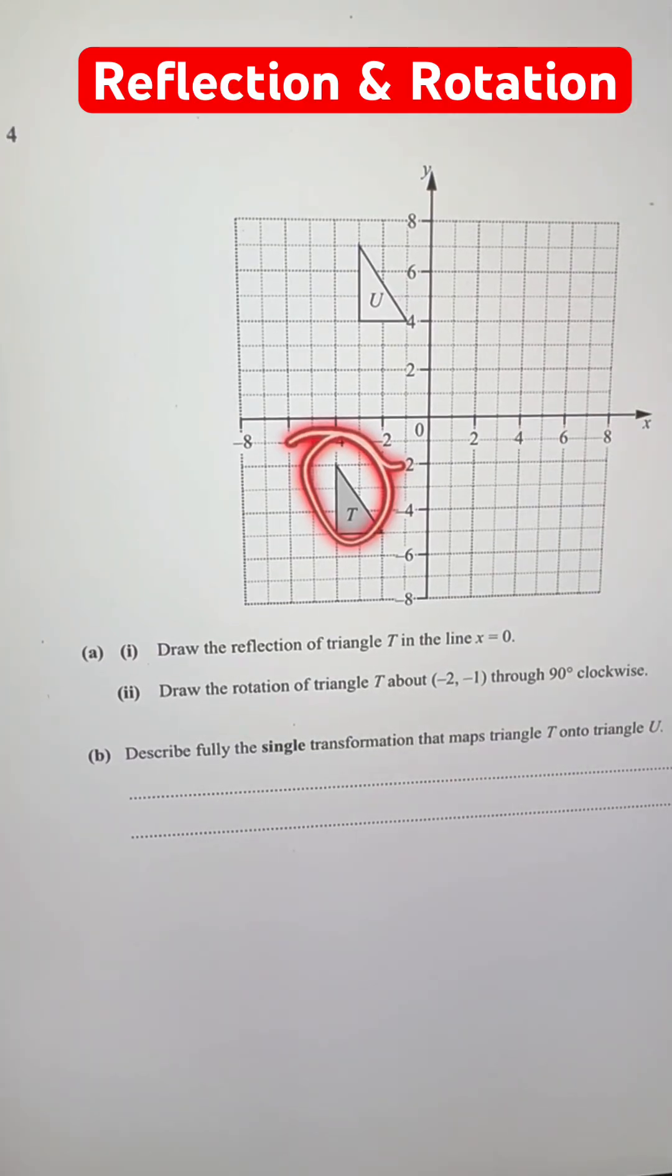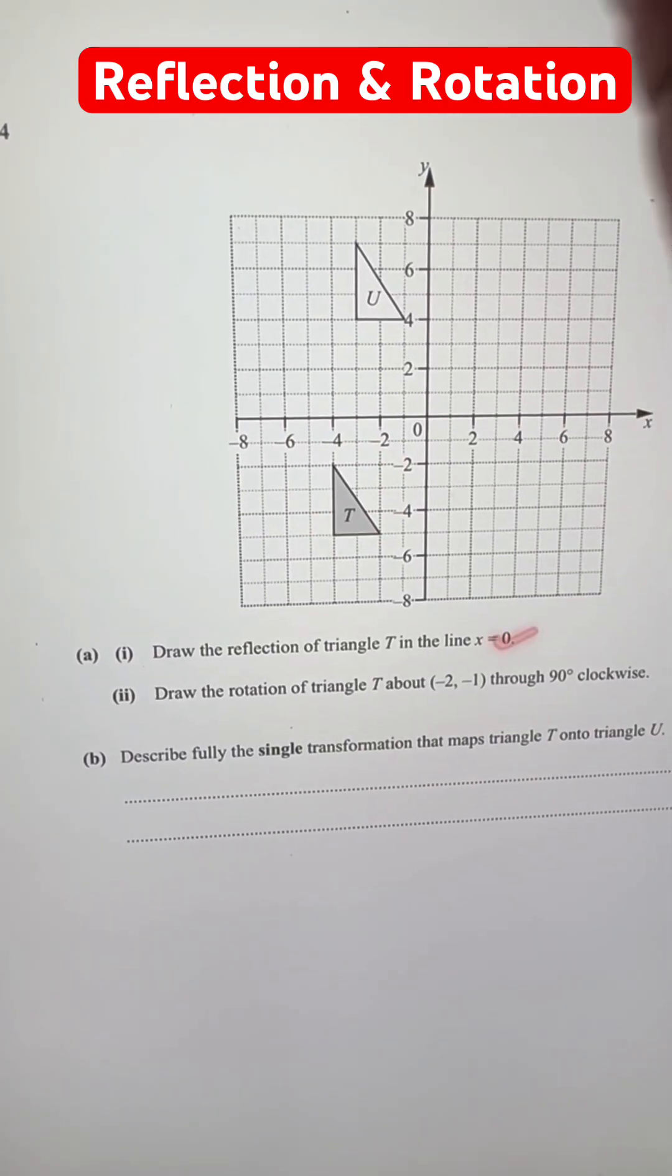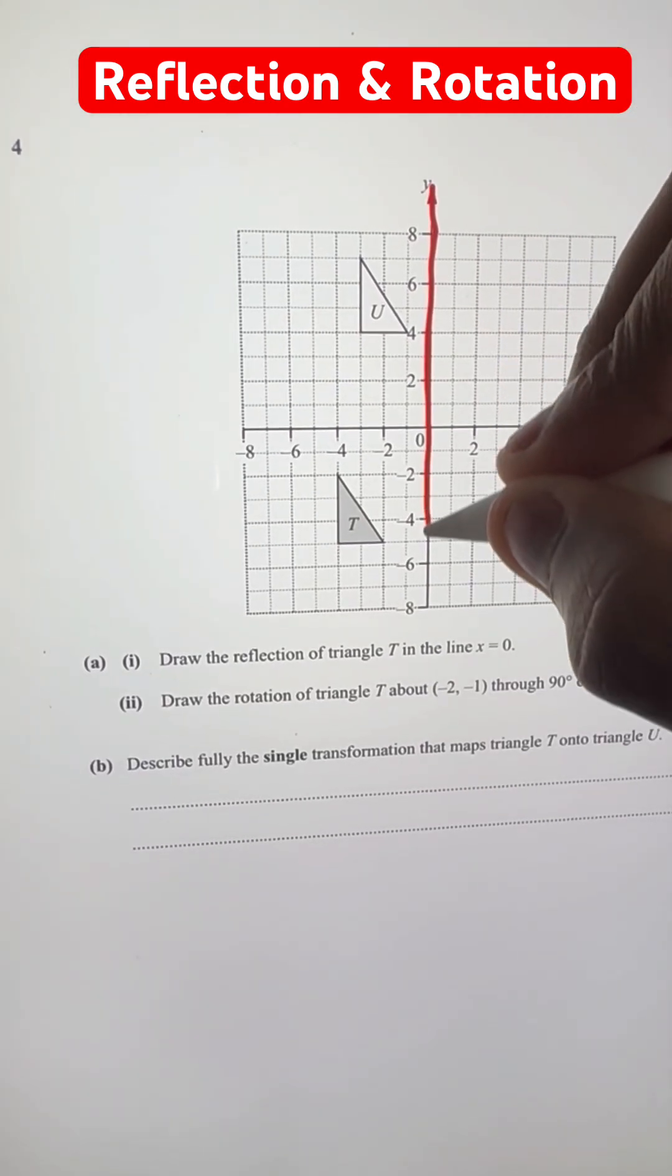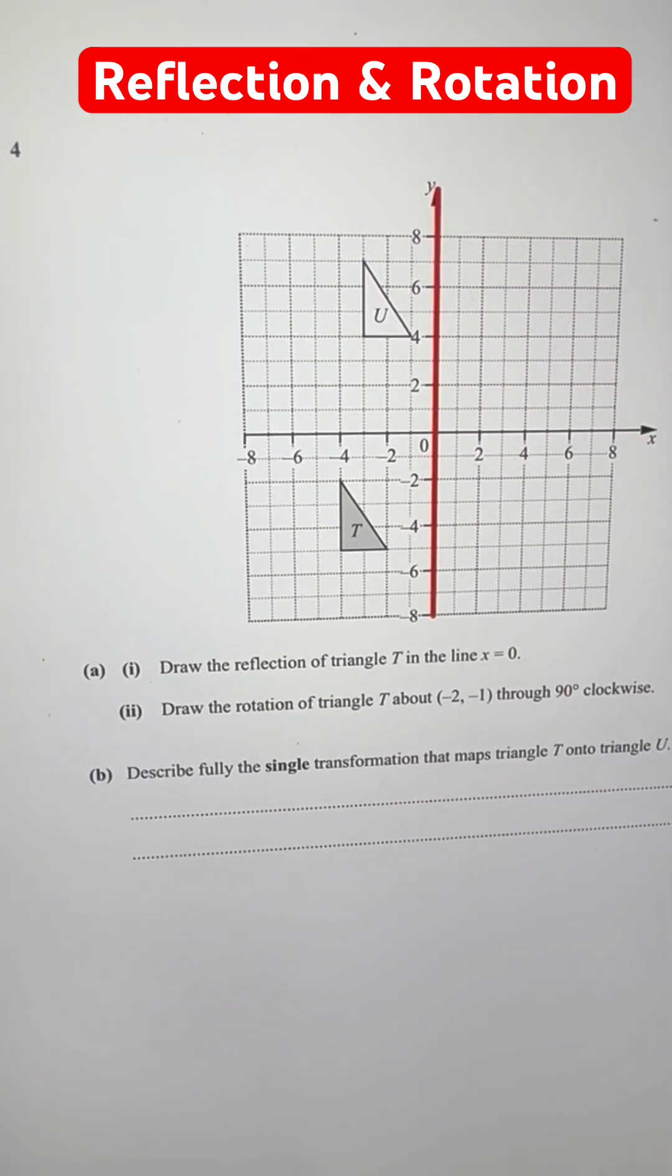Draw a reflection of this triangle T in the line x equals 0. First, let's draw the line itself, x equals 0. That's basically the y-axis over here, so this is x equals 0.